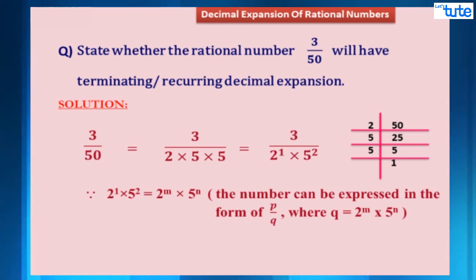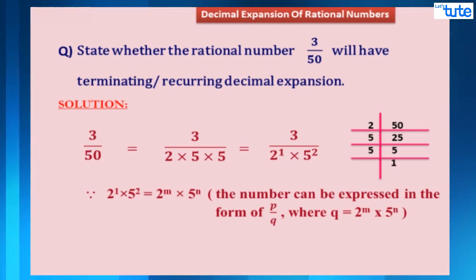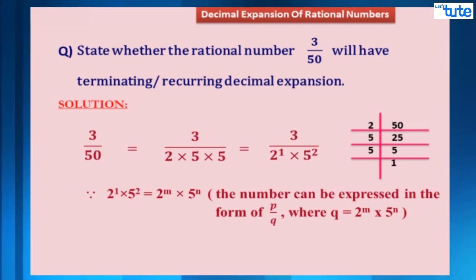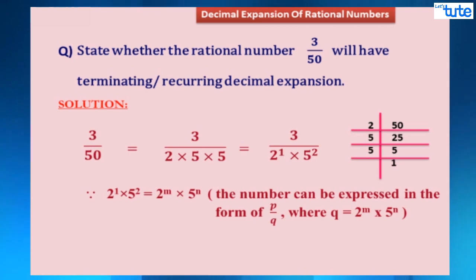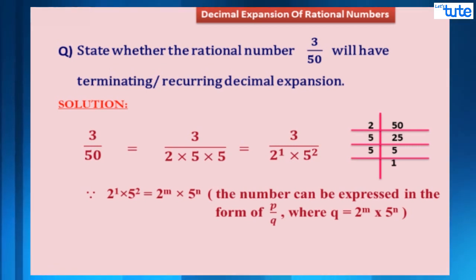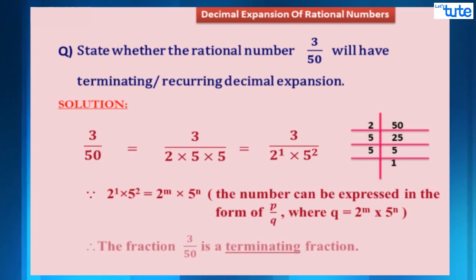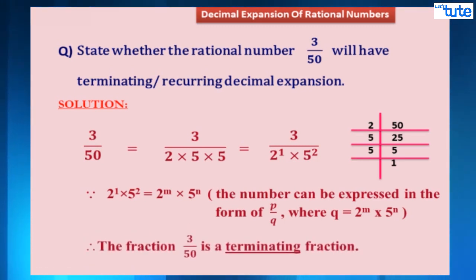By observing this, we can easily say that 2 raised to 1 into 5 raised to 2 is of the form 2 raised to m into 5 raised to n. That means the fraction 3 upon 50 can be expressed in the form p by q where q is of the required form, and hence we can conclude that the fraction 3 upon 50 is a terminating decimal.